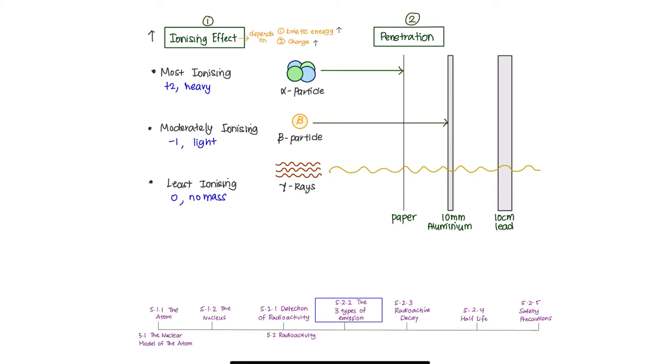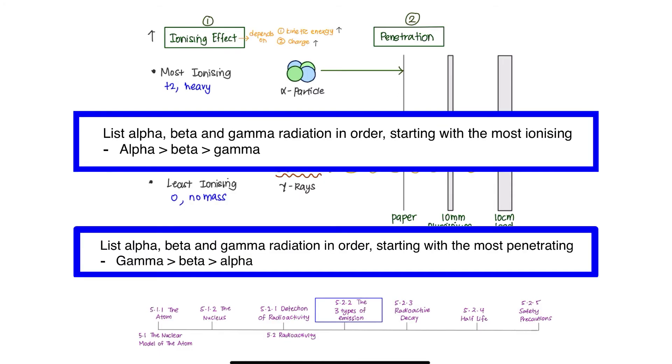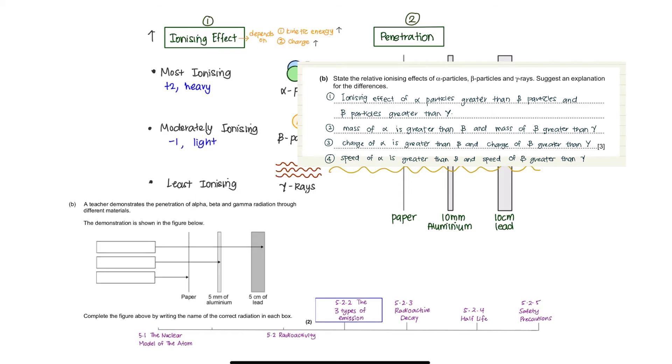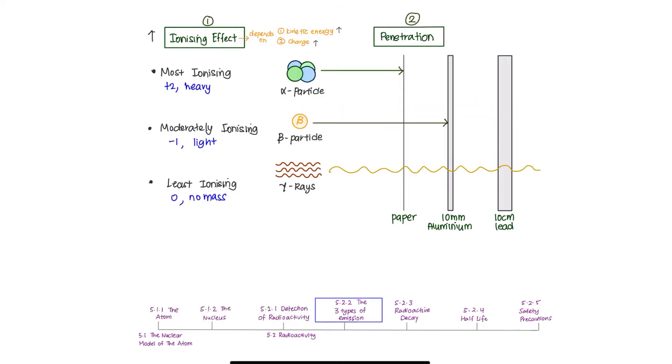Now, pause this video and please remember the orders for alpha, beta, and gamma in their ionizing effect and penetrating power. It's a common question that they will ask you in your paper 4 theory. So, make sure you understand this very well and remember all these.